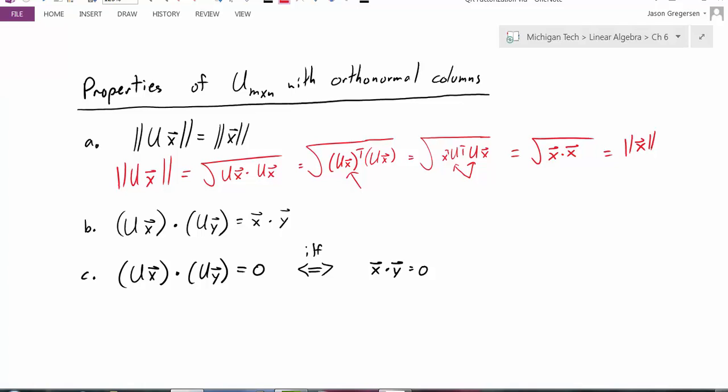So in this video we've talked about when a matrix U has orthonormal columns, we've looked at their properties, and we've defined what an orthogonal matrix is. It's an N by N matrix that has orthonormal columns. And that concludes this video. Thank you.